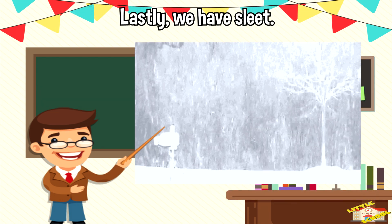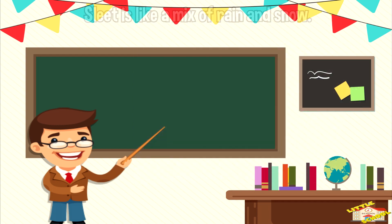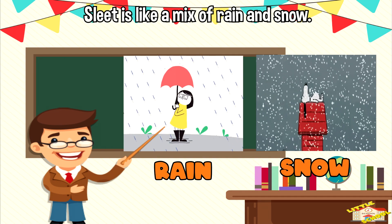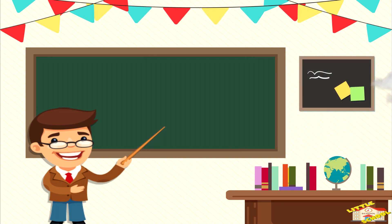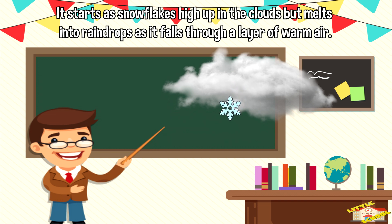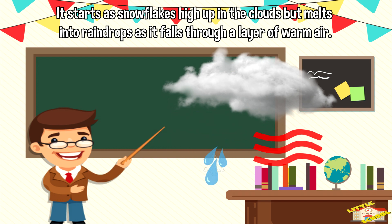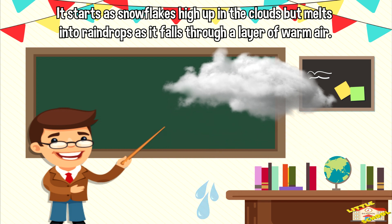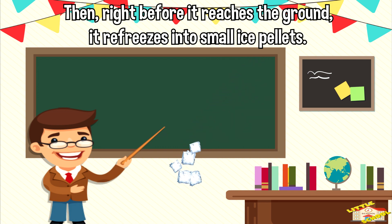Lastly, we have sleet. Sleet is like a mix of rain and snow. It starts as snowflakes high up in the clouds but melts into raindrops as it falls through a layer of warm air. Then right before it reaches the ground, it refreezes into small ice pellets.